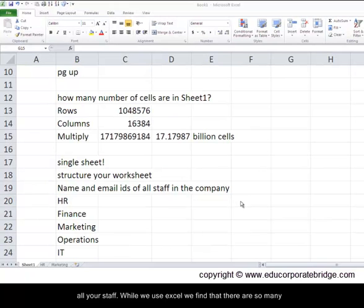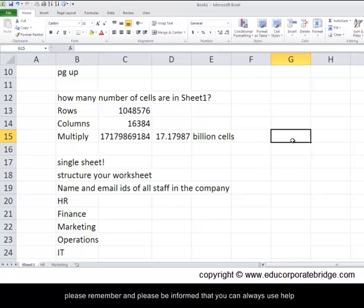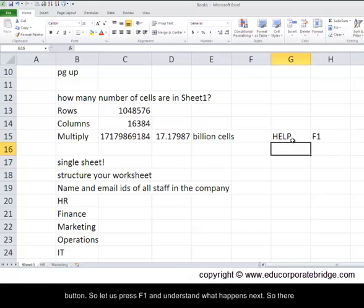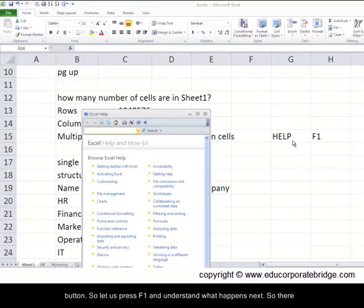The better way while we use Excel, we find that there are so many functions or commands which we may not know or probably we have gone through those functions earlier but we still don't remember those functions. So that situation may come time and again. So in that case please remember and please be informed that you can always use help function from the menu command and by typing just F1 from the top function buttons. So let us press F1 and understand what happens next.